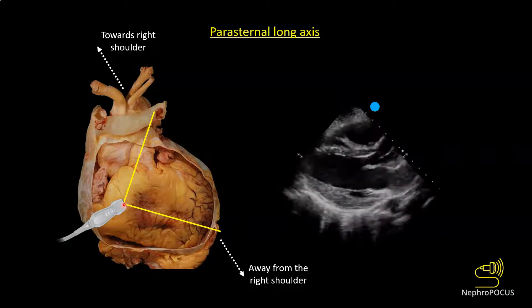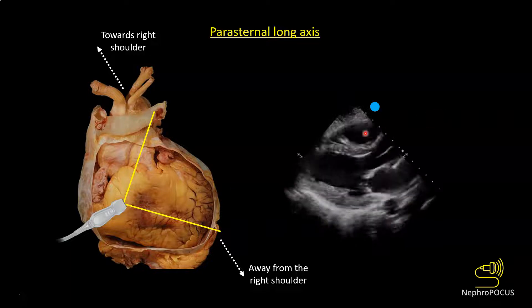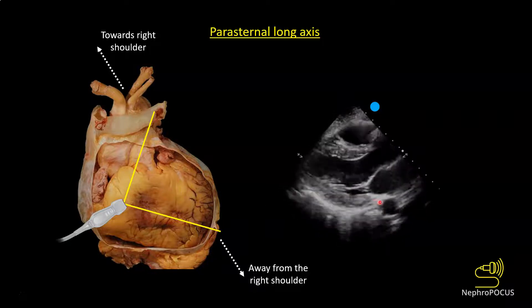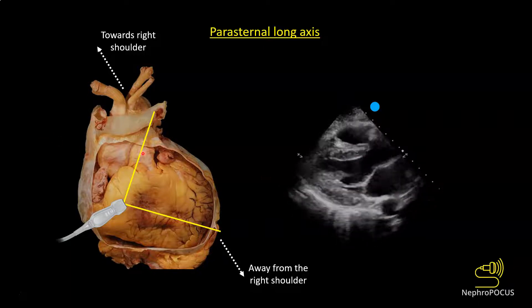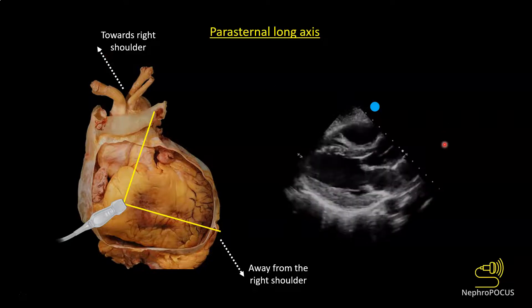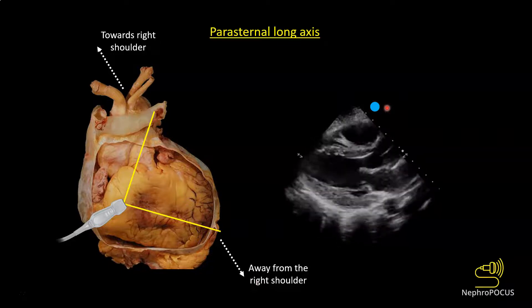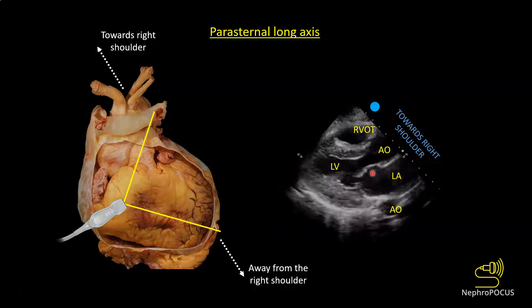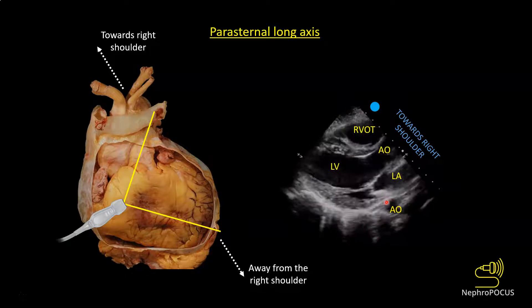In the anatomic image you can see that the probe is placed anteriorly and the first structure it encounters is the right ventricular outflow tract, so the RVOT is on the top of the image. As the ultrasound beam goes deeper you have the left ventricle, and things that enter the left ventricle — the left atrium — and things that leave the left ventricle — the aorta. The aorta is towards the right shoulder, so your probe orientation marker is towards the right shoulder. In the labeled image you have the right ventricular outflow tract, left ventricle, left atrium opening into the left ventricle with the mitral valve, the left ventricle opening into the aorta with the aortic valve, and here is the cross section of the descending aorta.